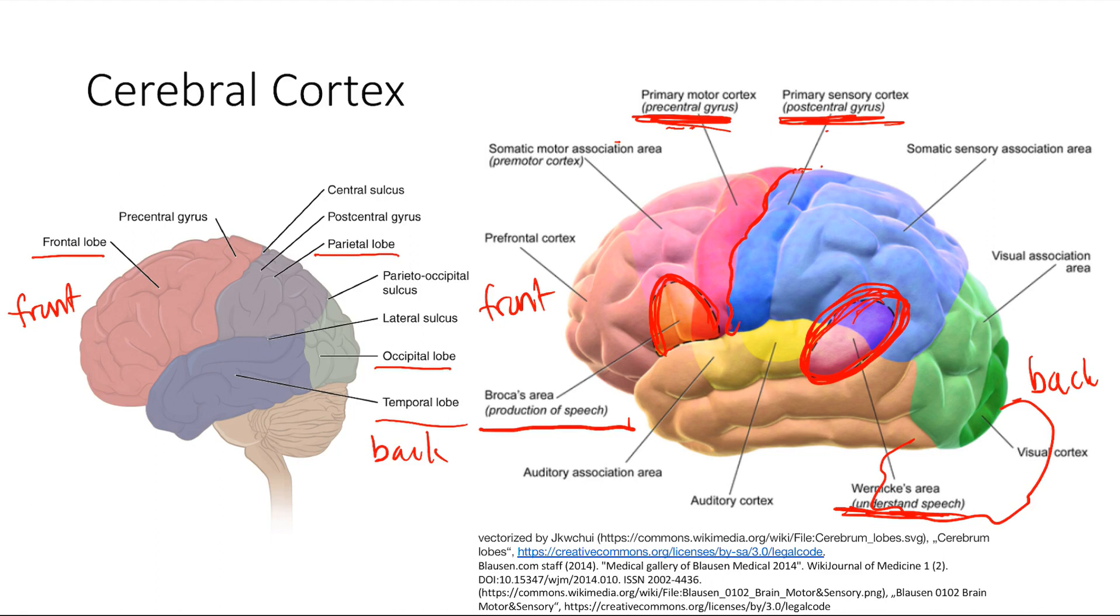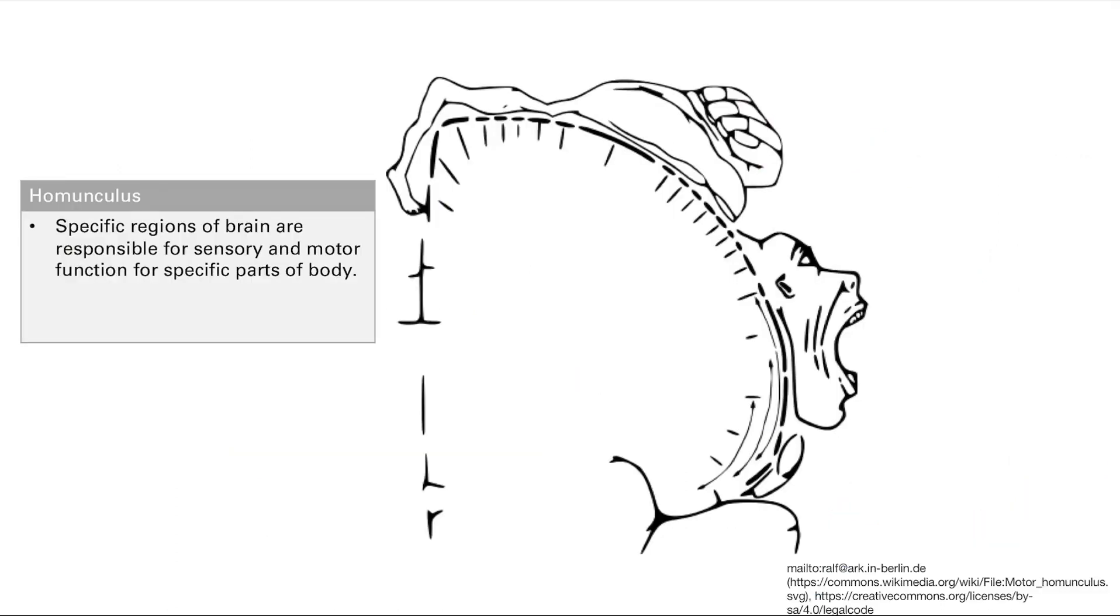And finally, we have the visual cortex. This is basically in the occipital lobe. Now we have the homunculus.